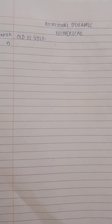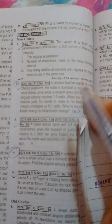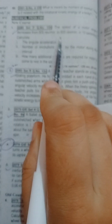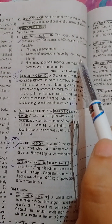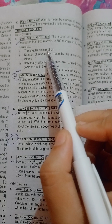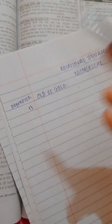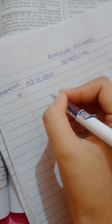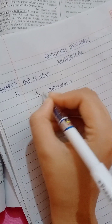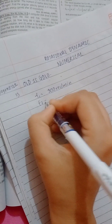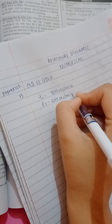The speed of a motor engine decreases from 900 rpm to 600 rpm. We will see how much time is done — the time interval is 10 seconds.